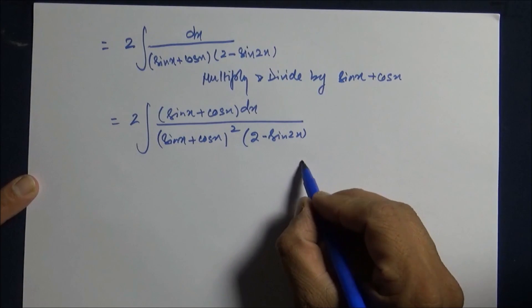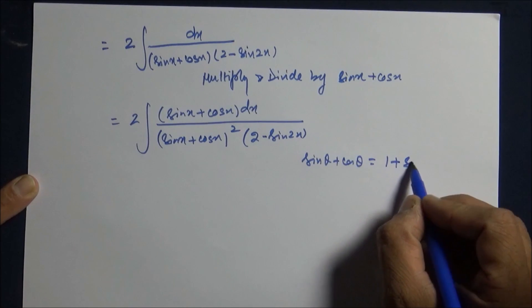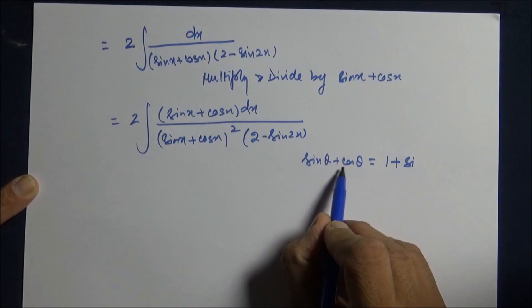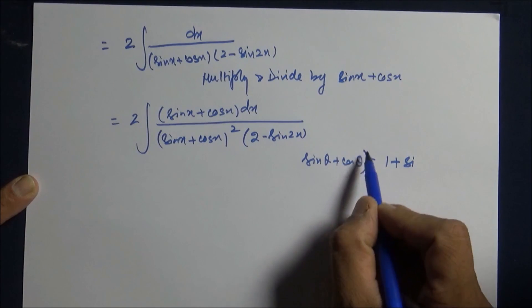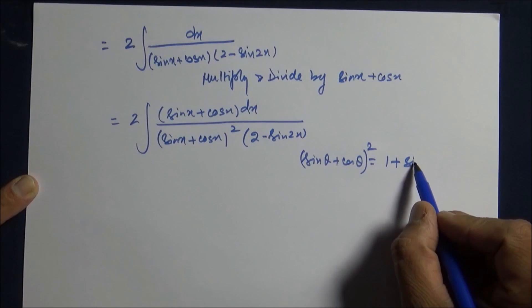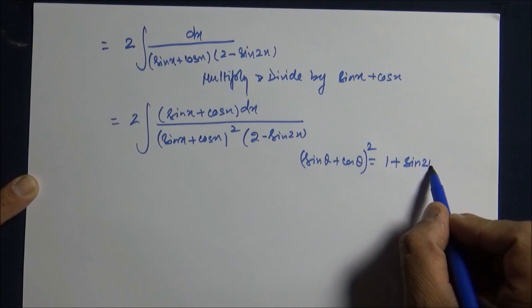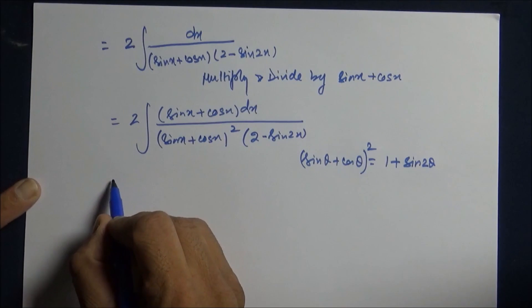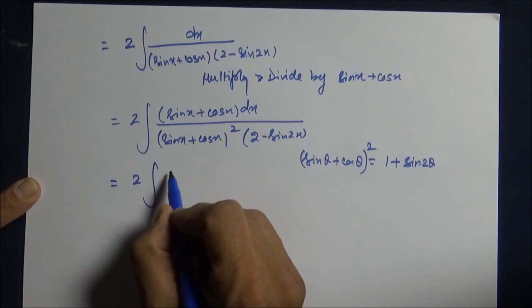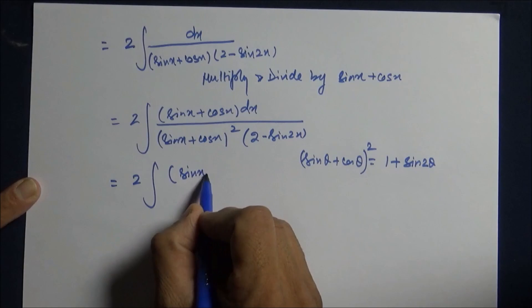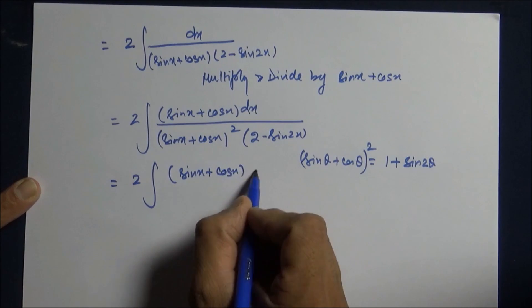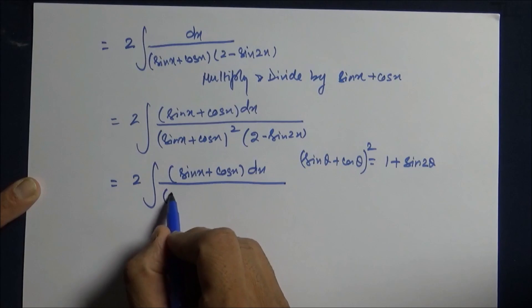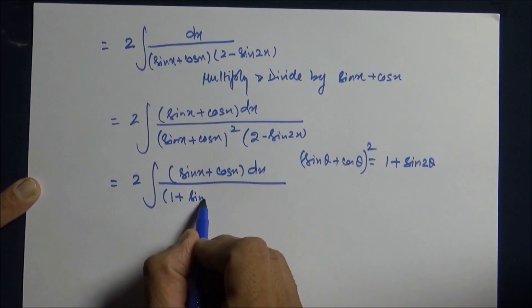Everyone knows that we can write 2 outside: sin x plus cos x dx over 1 plus sin 2x.